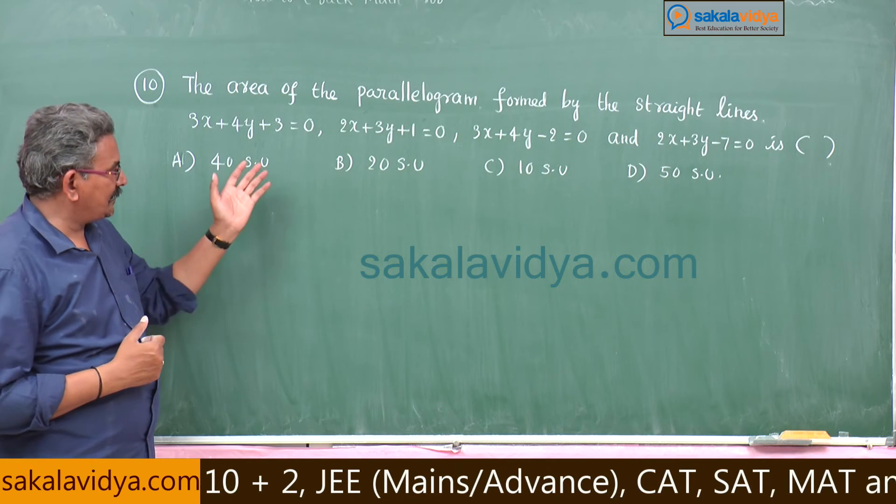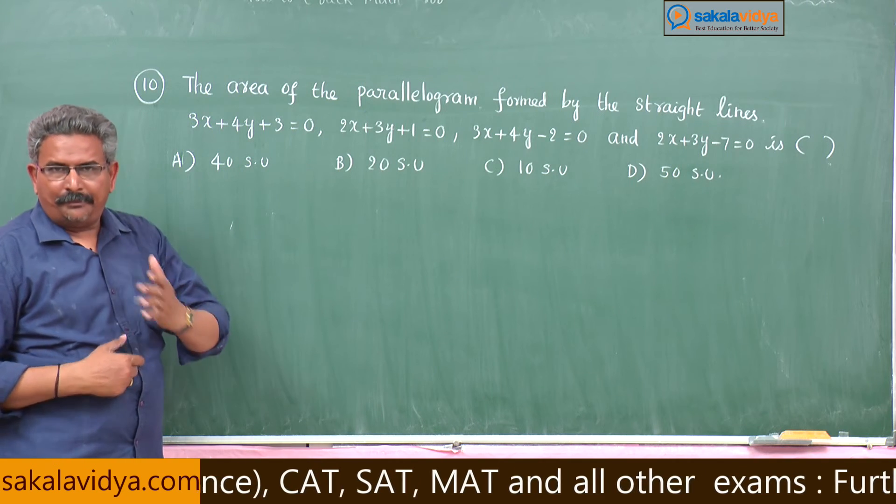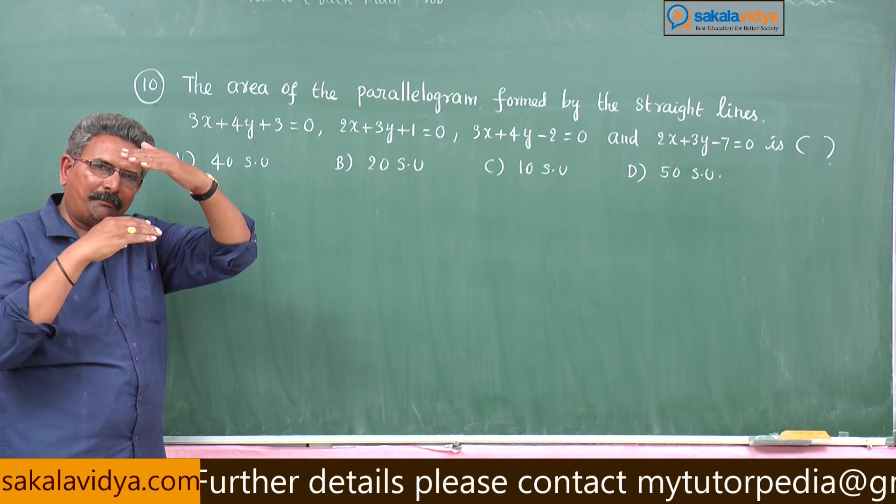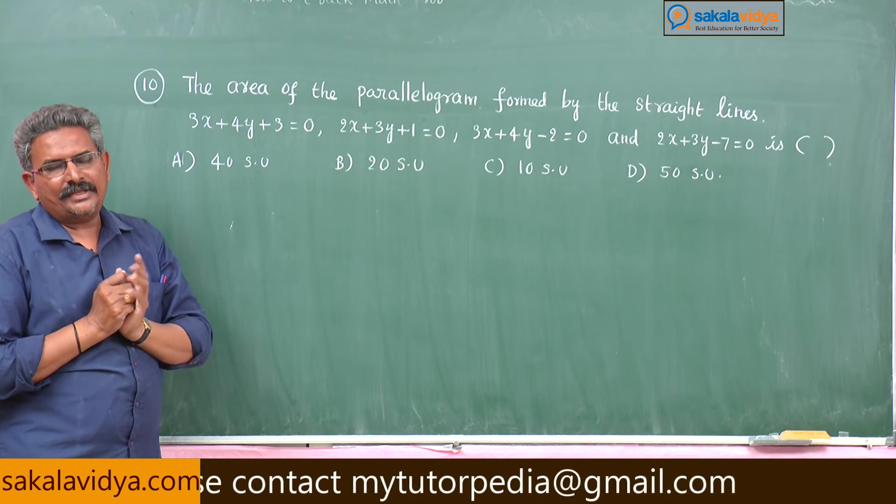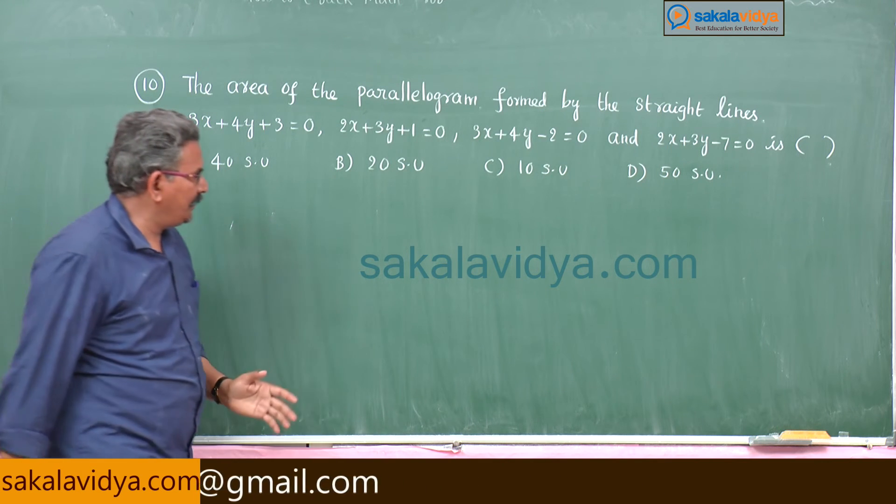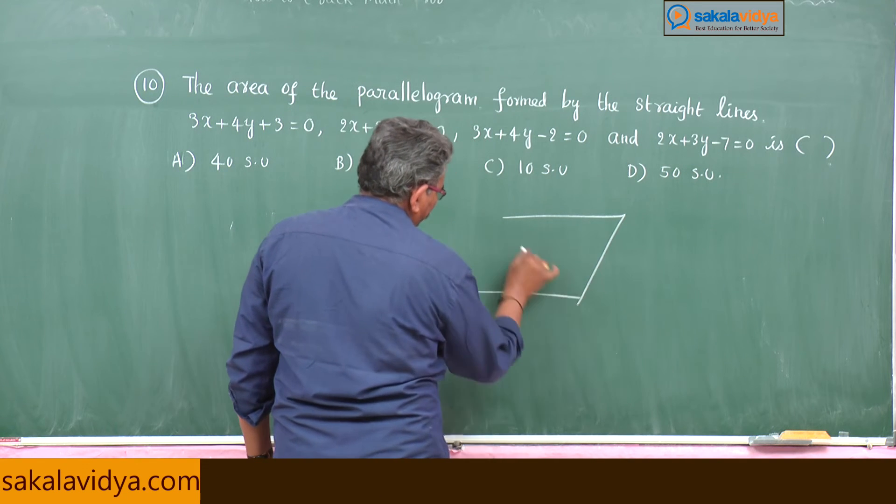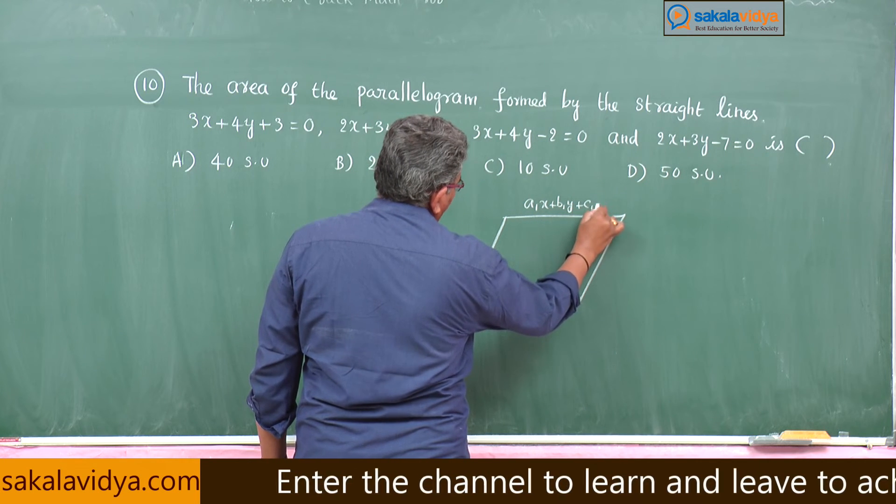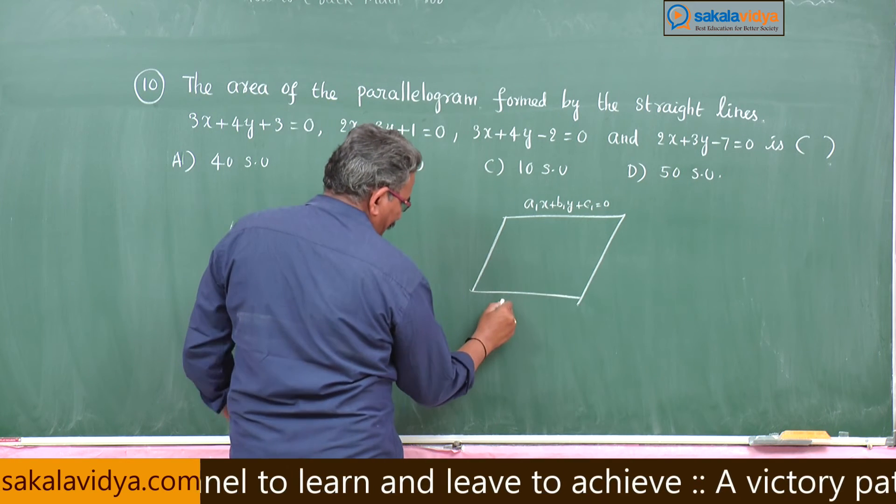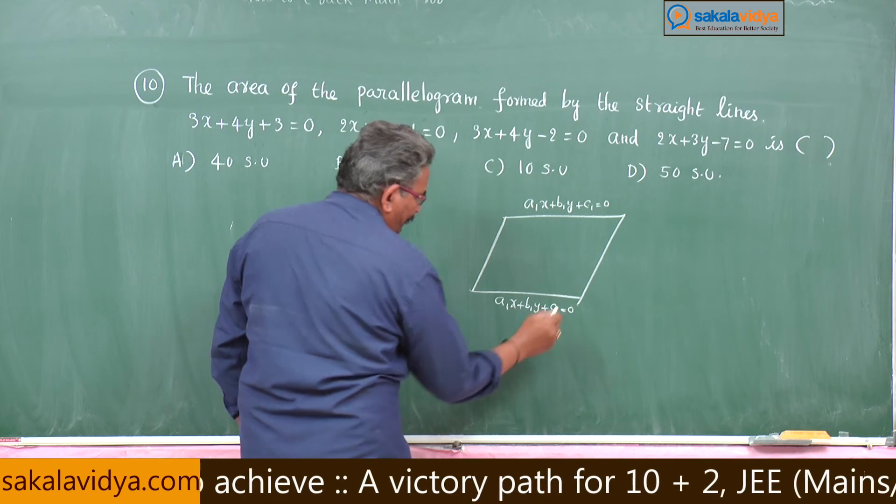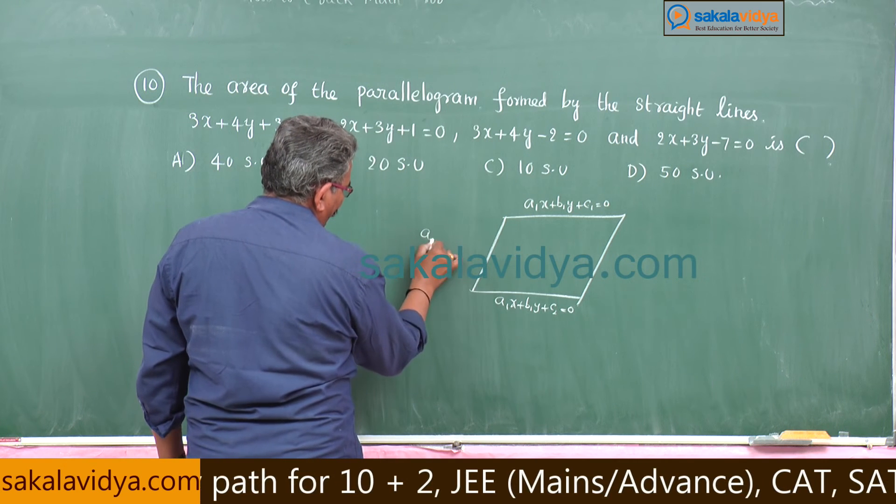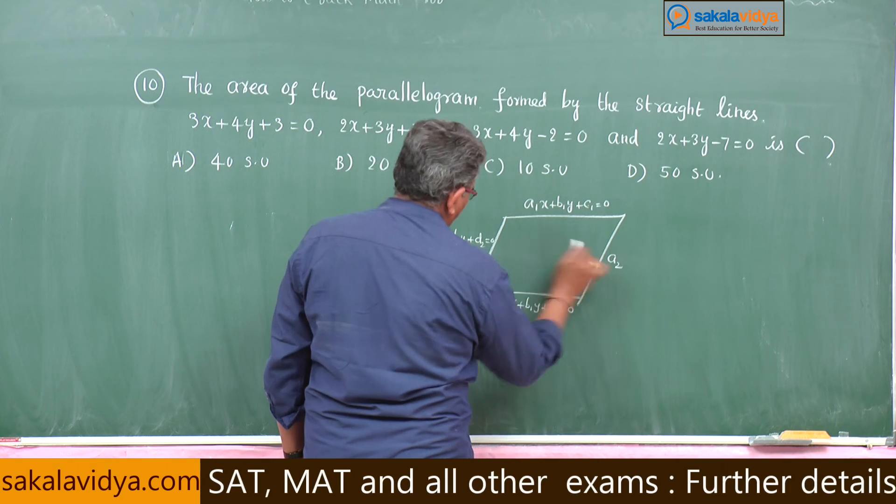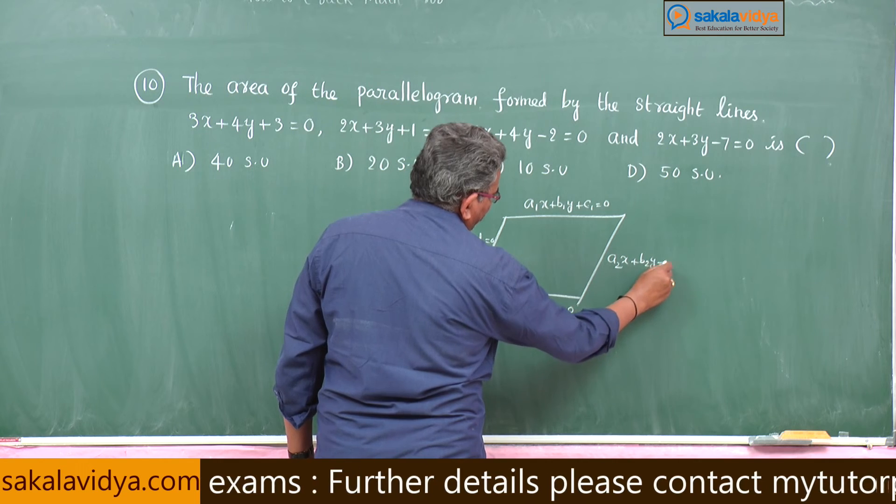But whenever the equations of the straight lines are given, better you remember a shortcut formula. Generally two sides of a parallelogram are parallel, meaning they differ only by the constants. Suppose this is a1x plus b1y plus c1 equals 0, then this must be a1x plus b1y plus c2 equals 0. Similarly, if this is a2x plus b2y plus d1 equals 0, then this is a2x plus b2y plus d2 equals 0.